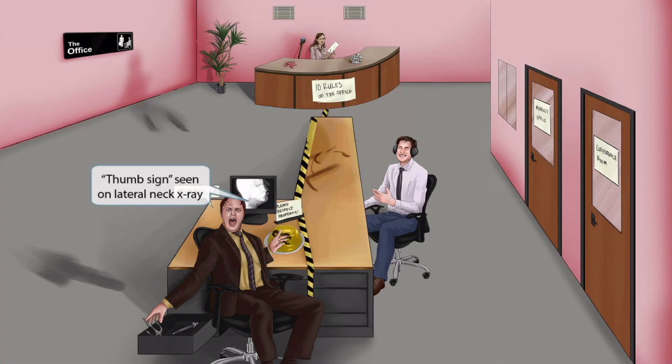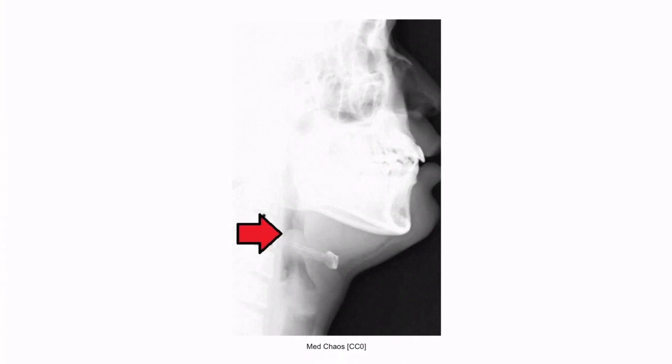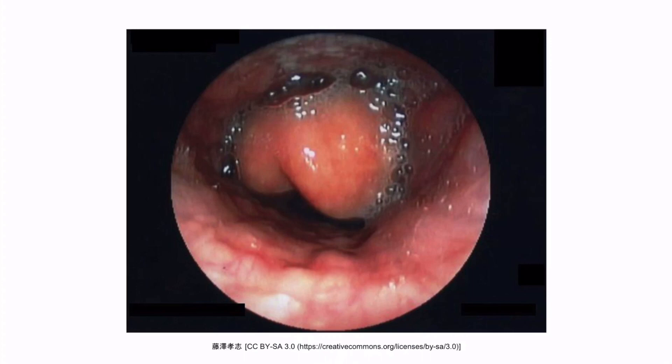The computer screen looks like the thumb sign, so it's here to help you remember that a thumb sign may be seen on a lateral neck x-ray. This is an image of a lateral x-ray of the neck showing the thumb sign — you can see some resemblance of a thumb. Sometimes you may also see a cherry red epiglottis, which you can see well in this endoscopic image of the epiglottis right here.